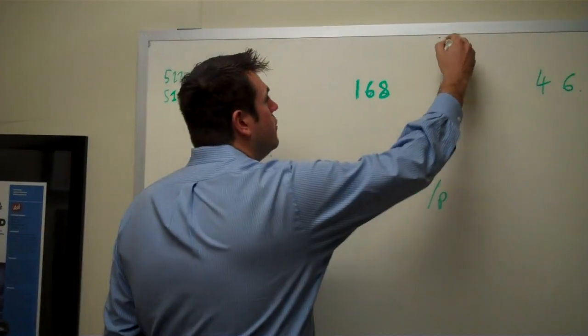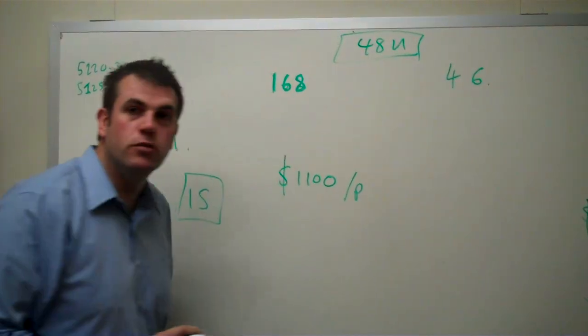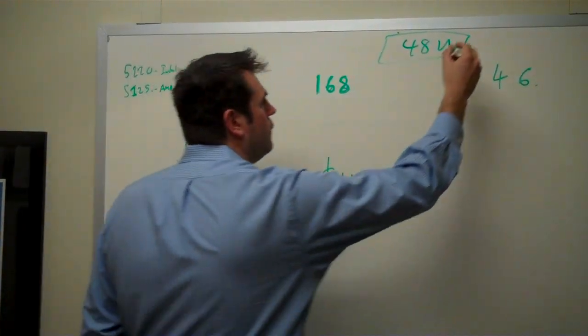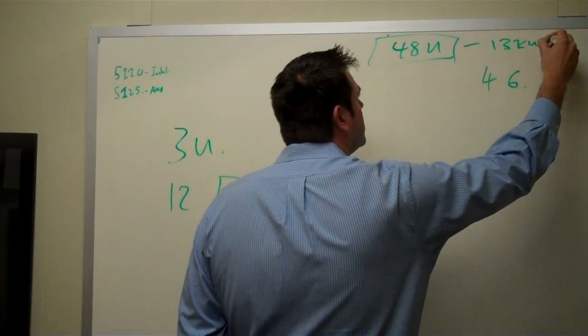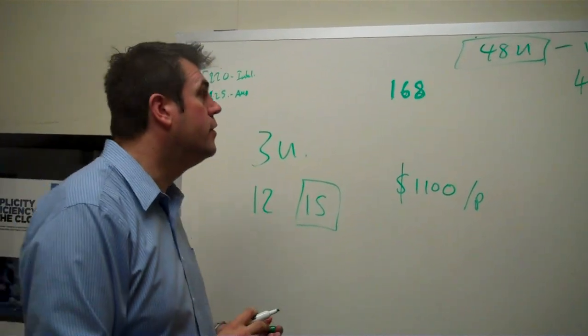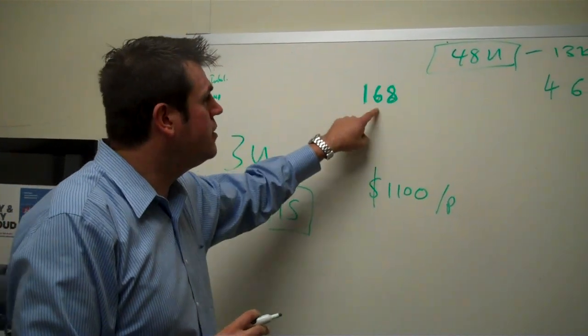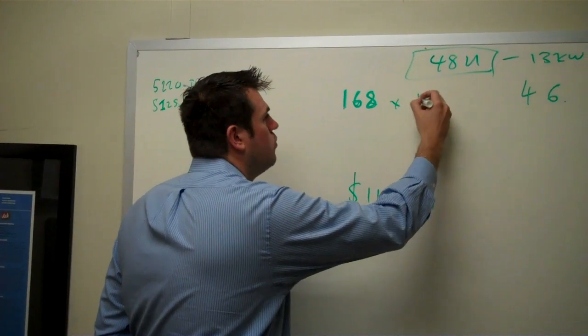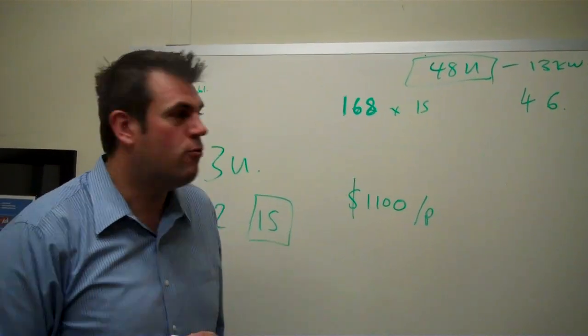Well, if they're using a 48U rack, which most of them do today, and they can get roughly 13 kilowatts of power to that rack, which a good hosting company should really do, then they can get 168 one-socket Dell servers in that rack.